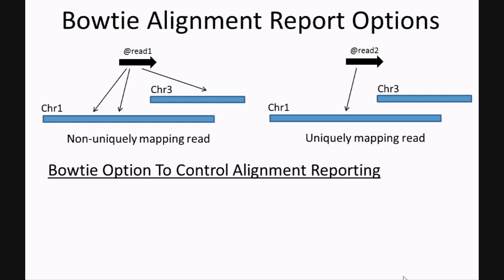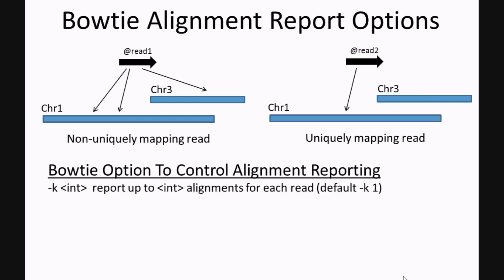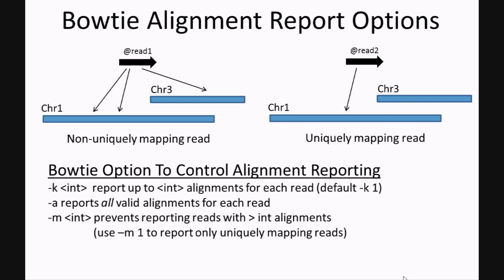Bowtie has several options to control how alignment is reported. These include the -k option, which controls how many alignments to report for each read. The default setting for Bowtie is to report one alignment per read. But if you set this number to, say, three, and a read had three valid alignments, it would report all three. Conversely, the -a option would report all valid alignments for each read. And the -m option prevents the reporting of reads that have greater than some number of alignments. So in our case where a read might map to three places, if m was anything less than three, no alignment would be reported.